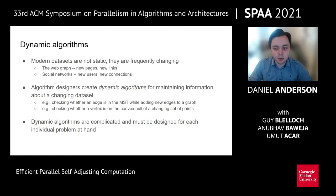For example, you might have a dynamic algorithm that allows you to query whether a particular edge is in the minimum spanning tree of a graph as you add and delete edges. Or you might have an algorithm that allows you to check whether a point is on the convex hull of a set of points as you add and remove points. The problem is that dynamic algorithms are very challenging to design and implement, and they have to be designed for each individual problem.